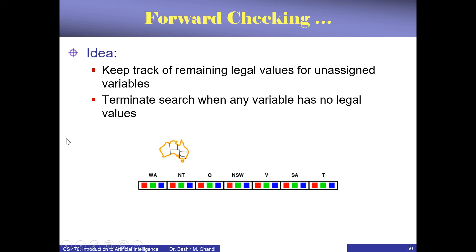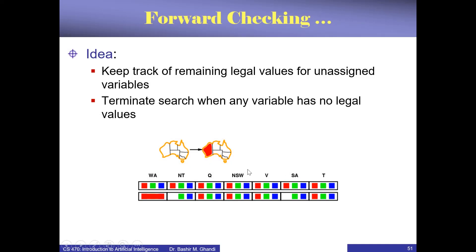This saves time — after deleting that value you may see there is no solution and backtrack immediately rather than waiting until you reach there. This heuristic eliminates branching on certain variables by propagating information forward. The basic idea is to keep track of remaining legal values for unassigned variables and terminate the search when any variable has no legal values. This requires a data structure to keep this information, so there is a cost in terms of space.